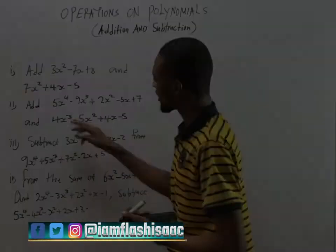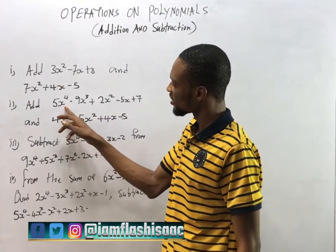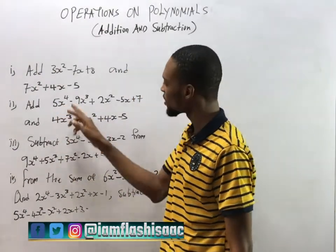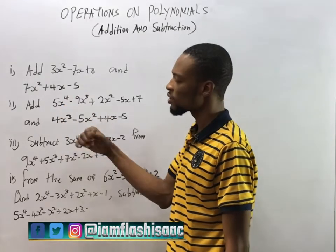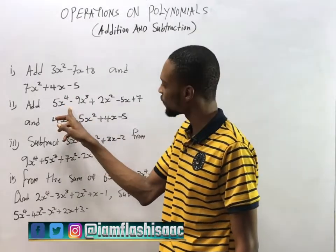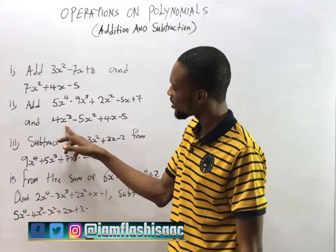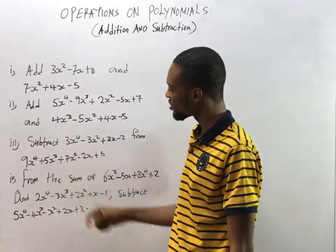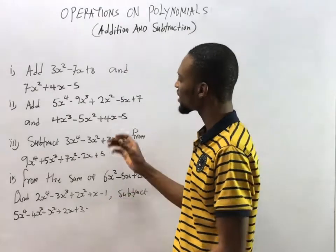Take a look at this polynomial expression. The variable with the highest power is 4 — s raised to the power of 4 — so the degree of this polynomial is 4. In this next example, the highest power variable is 3, so it is of degree 3.